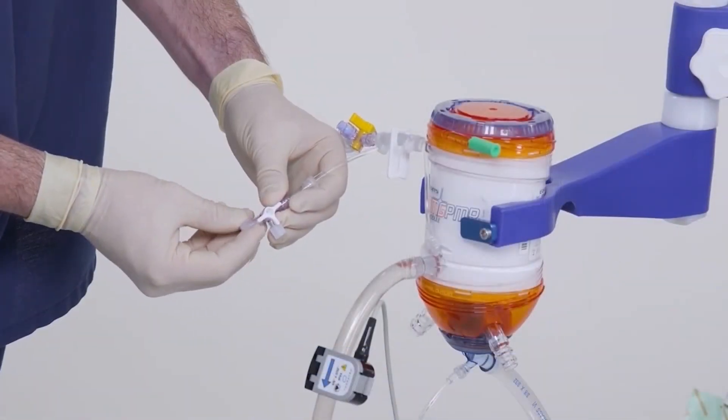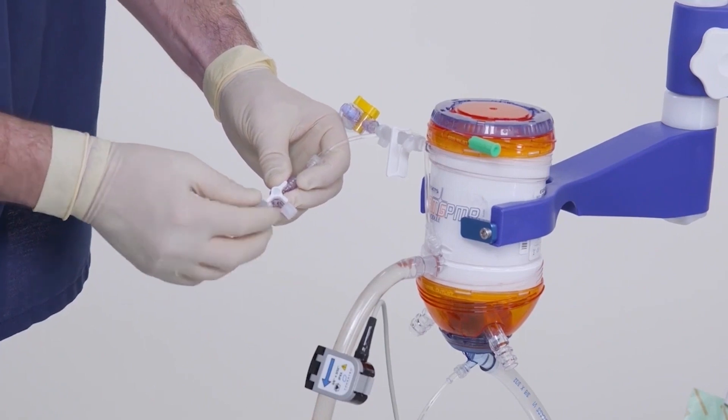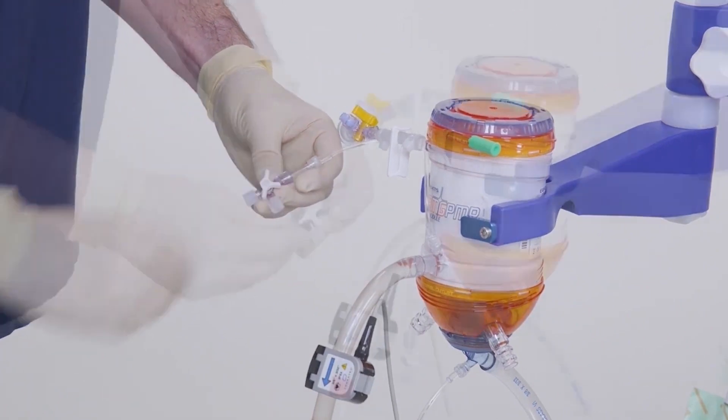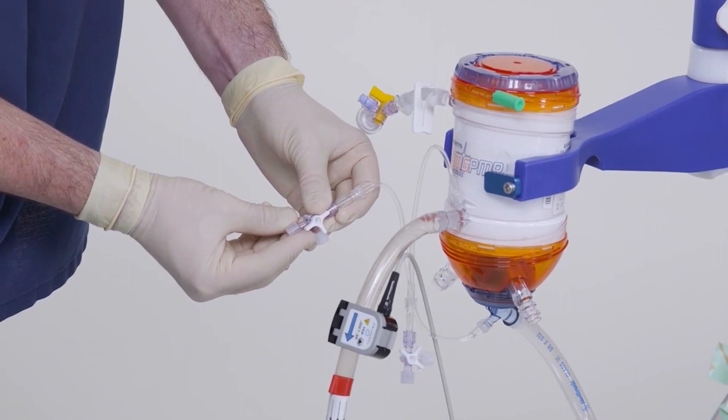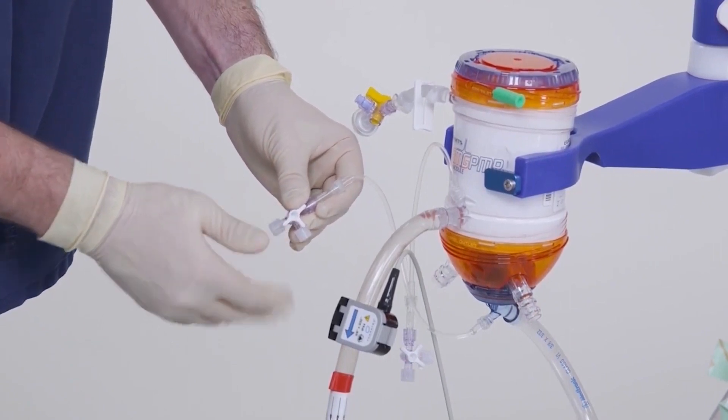If the pigtails were used, de-air the lines by opening the stopcock and slowly removing the cap. Once the lines are purged, re-close the stopcocks.